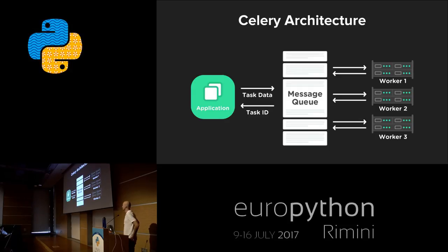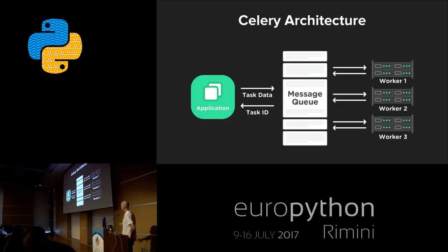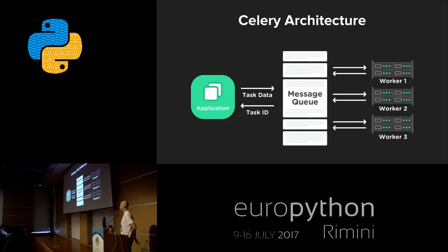This is an exemplary Celery architecture. Here we see that we have an application, a message queue, and one or more workers. We will see these slides many times during this presentation because this is the basic Celery architecture. We don't care about the result database or anything else — this is the simplest possible implementation. Let's look at each element and analyze what they do.